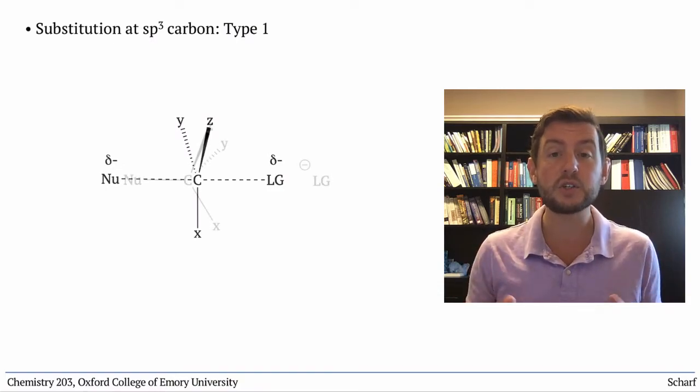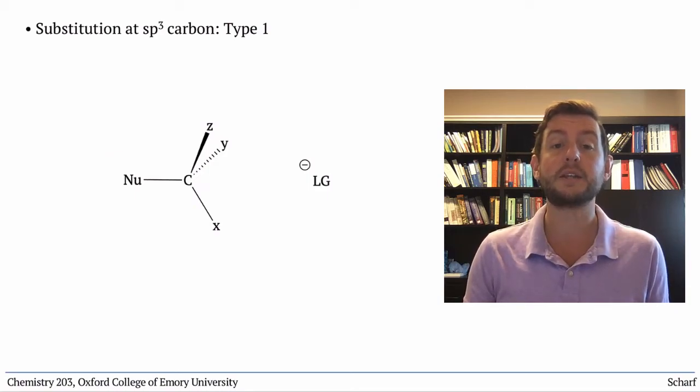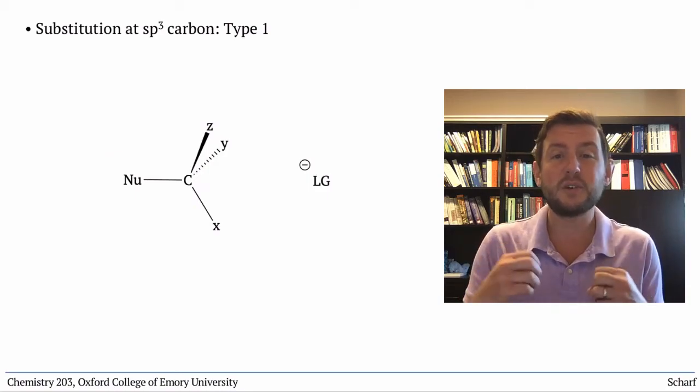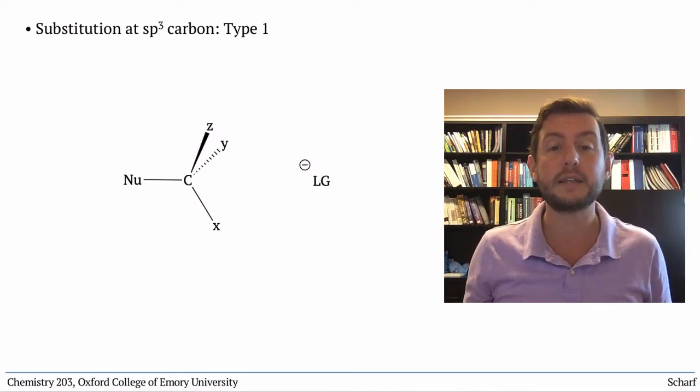During this concerted bond making and bond breaking, the other groups attached to the central carbon do a sort of umbrella flip, inverting the stereochemistry at that carbon.